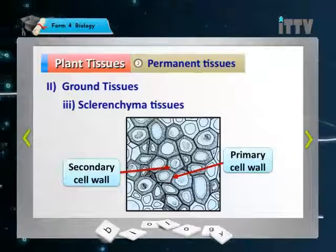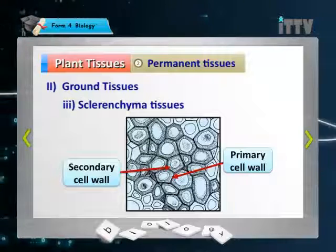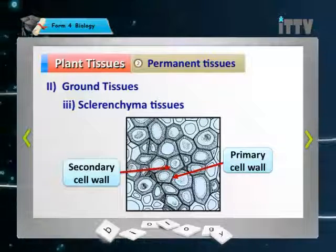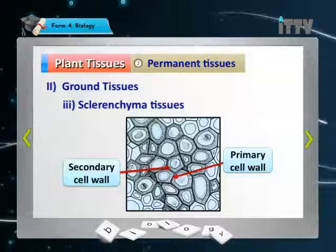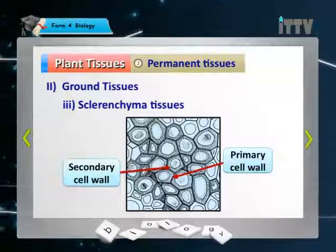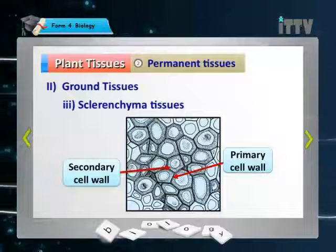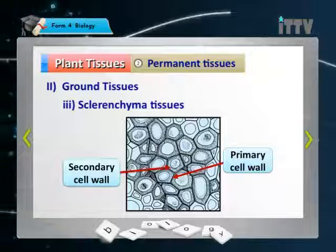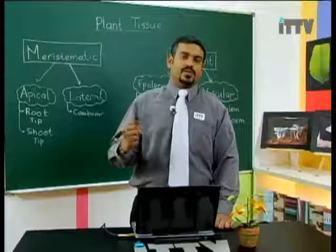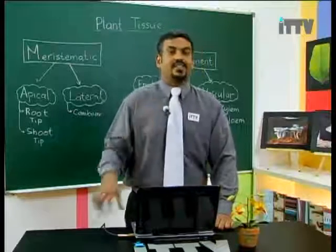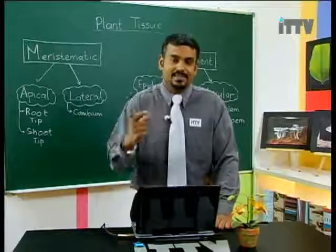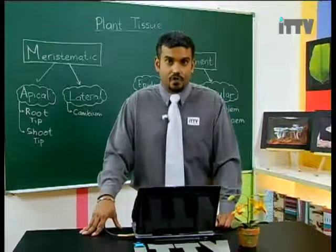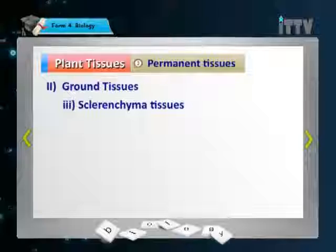Now pay attention to sclerenchyma tissues. They look even stronger than colenchyma tissues because they have a primary cell wall and a secondary cell wall — the cell wall is fortified and very strong. Sclerenchyma tissues are cells which have cell walls uniformly thickened by lignin. These cells are more rigid than colenchyma tissue. Most of the cells are dead when they reach maturity.